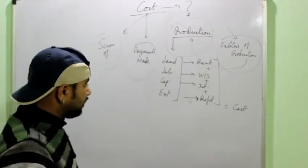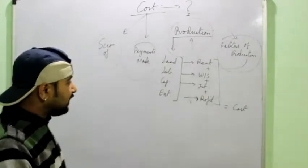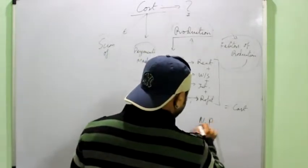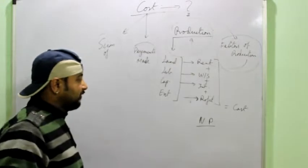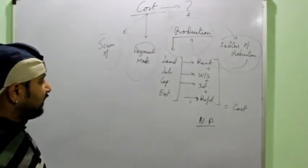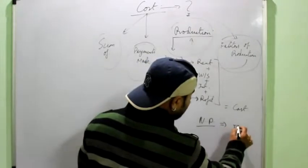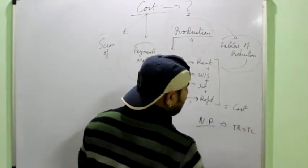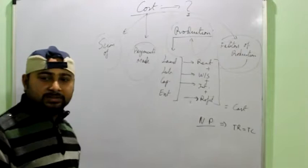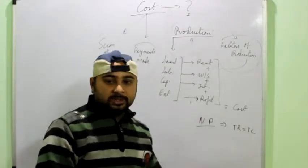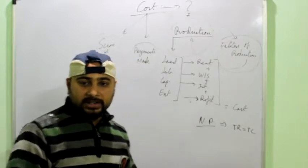Now, one more thing you have to understand. You often come across the term normal profit in economics. That I am telling you here only so that you don't get confused later on. Very important thing. Normal profit in economics means that your total revenue is equal to the total cost. The money which you will receive by selling something. Total cost, how much money you have incurred on that commodity.